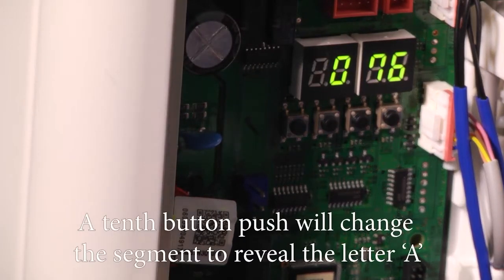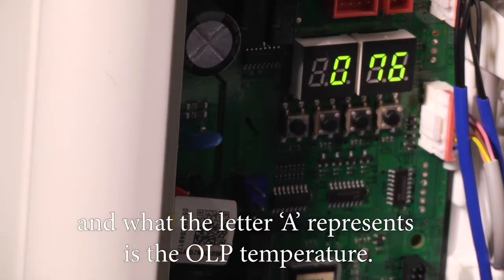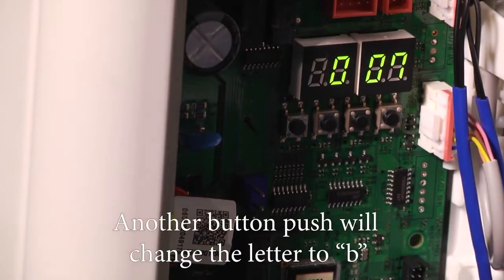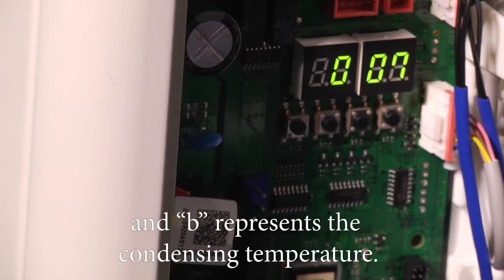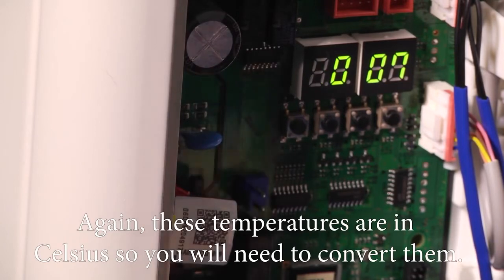A tenth button push will change the segment to reveal the letter A, and what the letter A represents is the OLP temperature. Another button push will change the letter to B, and B represents the condensing temperature. Again, these temperatures are in Celsius, so you will need to convert them.